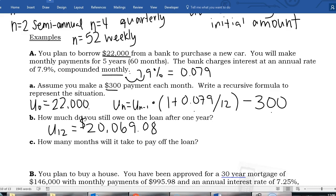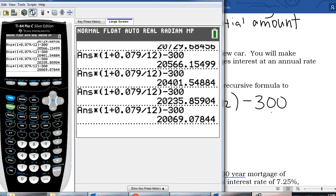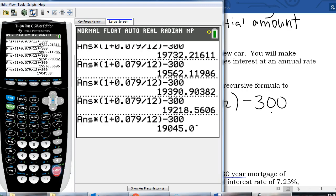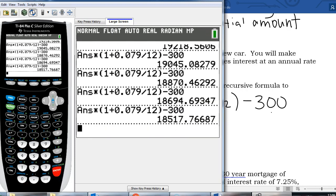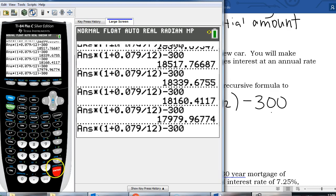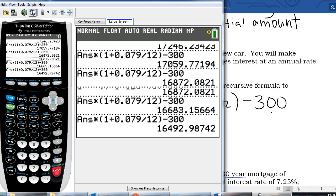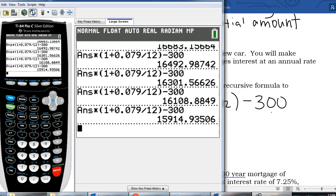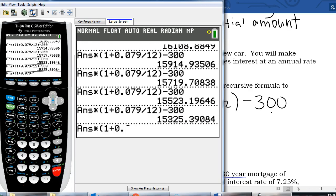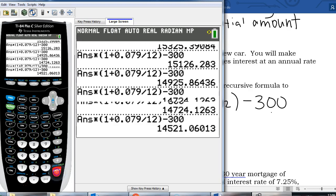How many months will it take to pay off the loan? So this one's kind of silly. In this situation I'm going to have to keep hitting enter and counting until I reach zero dollars. That's 12, 13, 14, 15, 16, 17, 18, 19, 20, 21, 22, 23, 24. This is two years of making payments and I still haven't paid off my loan. 25, 26, 27, 28, 29, 30, 31, 32, 33, 34, 35, 36, 37, 38, 39, 40, 41, 42, 43, 44, 45, 46, 47, 48.